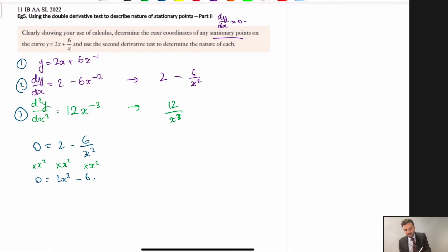Times it all by x squared. Okay? Next, let's rearrange. Okay, so it looks like we found our coordinates, x is equal to plus or minus root 3, okay?